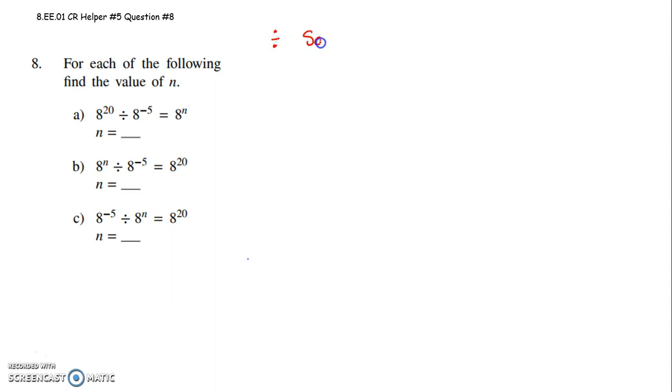When we're dividing with the same base, when we're dealing with exponents, our base is an 8. We subtract the exponents. In our first case, it would be 20 minus a negative 5, and we keep the base.